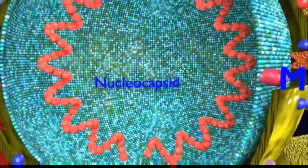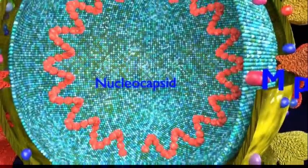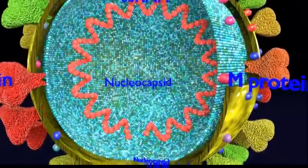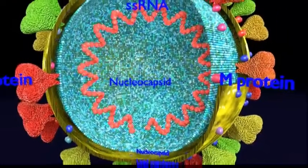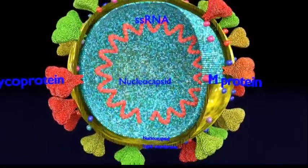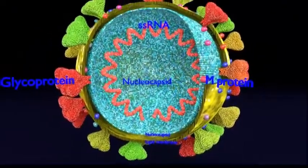Underneath the viral envelope is a shell called the nucleocapsid that encloses the genetic material of the virus, the single-stranded RNA. The nucleocapsid contains the N protein, which binds to the virus's single-stranded RNA.